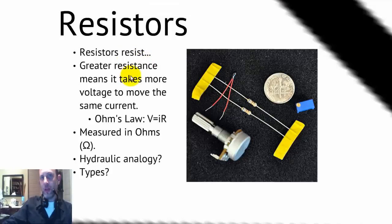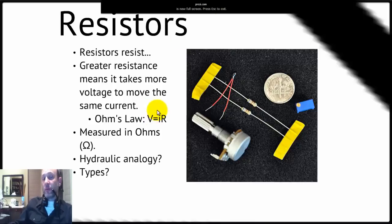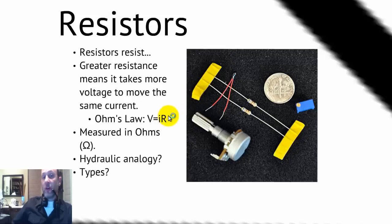What do resistors do? They resist, of course. You should know this equation, Ohm's Law. Basically it says the voltage across anything that resists, resistor, is going to equal the current times some factor, the resistance. So the current is directly proportional to the voltage. These are measured in ohms. That symbol there. You might have mega ohms or kilo ohms. What would a resistor be in the hydraulic analogy? And what types of resistors are there?